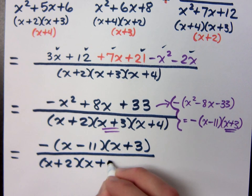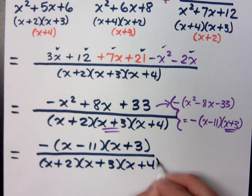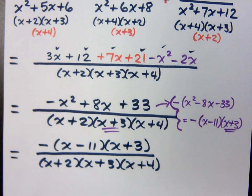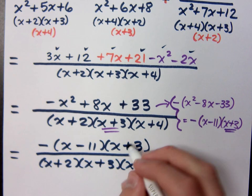And x plus 3 all over x plus 2, x plus 3, x plus 4. So you see, here is an example where we do want to factor because we actually get something to reduce away. And it's that factor of x plus 3.